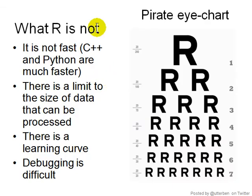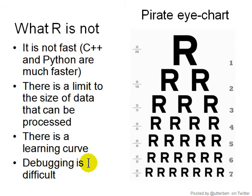So what is NOT R? R is not fast like C++ or Python, and there is a limited amount of data that can be processed — it is for medium and small data processing. For large data you need C, Java, or Python. There is also a very steep learning curve, and debugging is difficult. It's important that you know R well before you write any R code.